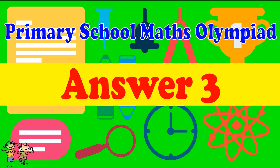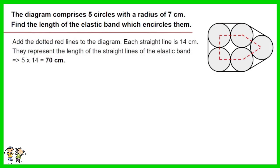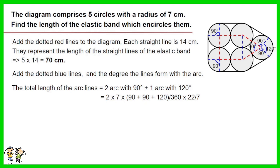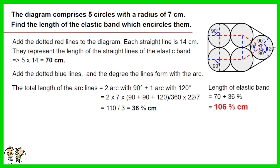Answer for Question 3. Add the dotted red lines to the diagram. Each straight line is 14 centimeters, representing the straight portions of the elastic band, which equals 5 × 14 = 70 centimeters. Add the dotted blue lines and the degrees the lines form with the arc. The total length of the arc lines equals 2 arcs of 90 degrees plus 1 arc of 120 degrees. Work out the equation — you get 36 and two thirds centimeters. Thus the length of the elastic band equals 70 + 36⅔. The answer is 106 and two thirds centimeters.